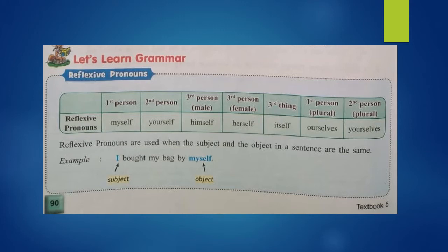Mainne apna bag khud kharida. Who bought the bag? I. So 'I' is the subject. I bought the bag — with whose help? No one. Without any help — myself. So 'myself' is the object.